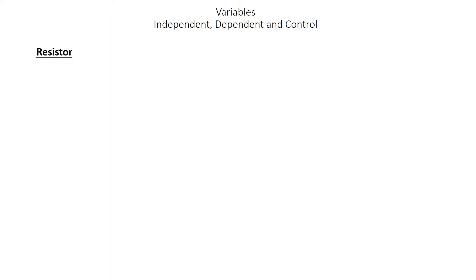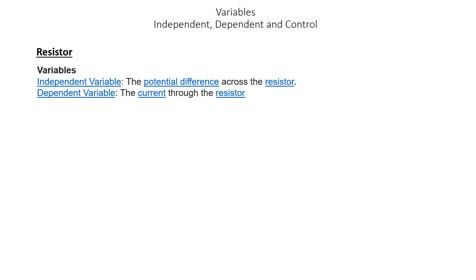Some fun facts about variables. The independent variable is the potential difference across the resistor. The dependent variable in this case is the current through the resistor.